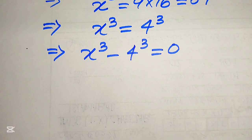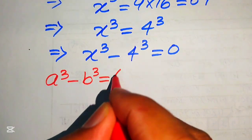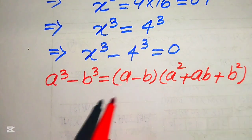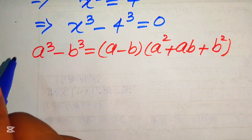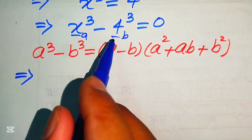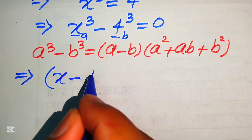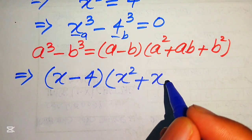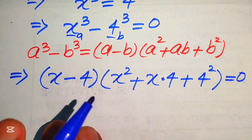You see here these two terms are written in cubic form. We apply the cubic formula: a cubed minus b cubed equals a minus b, times a squared plus ab plus b squared. Here our a is x and our b is 4. Putting these values in the right-hand side of the formula, we get: x minus 4, times x squared plus x times 4 plus 4 squared, and this whole equation equals 0.